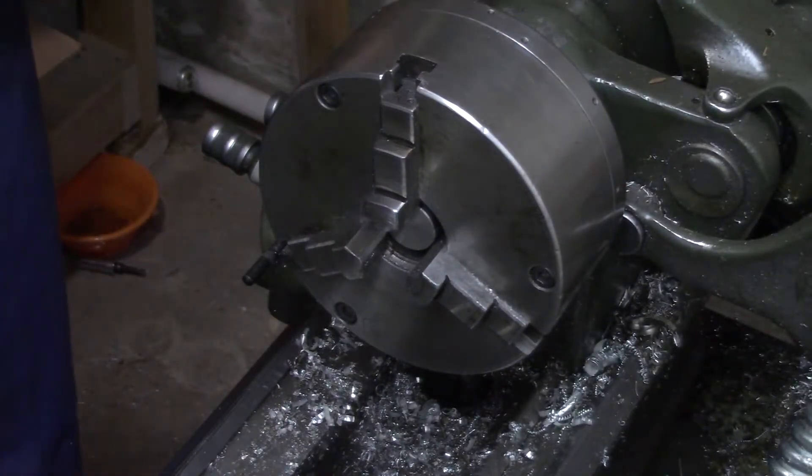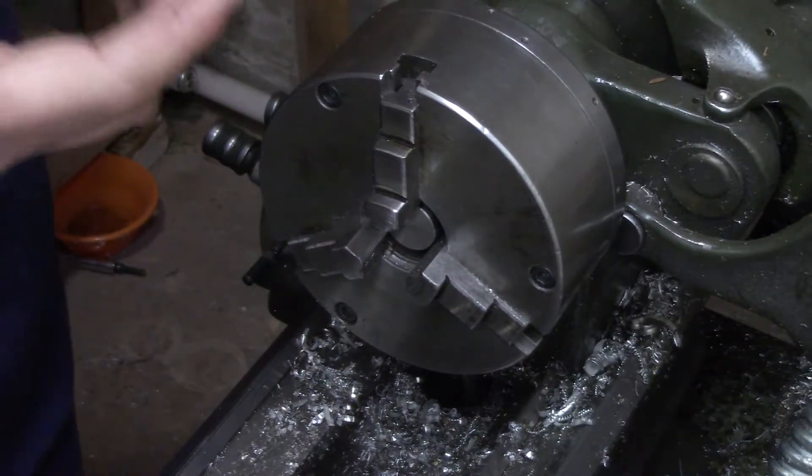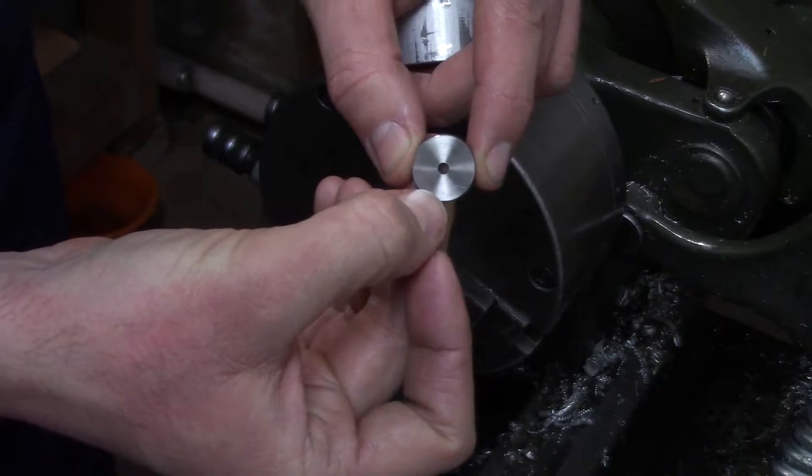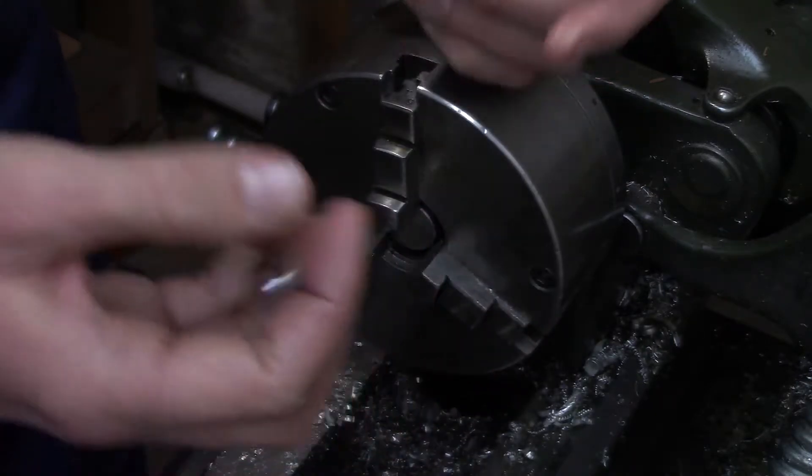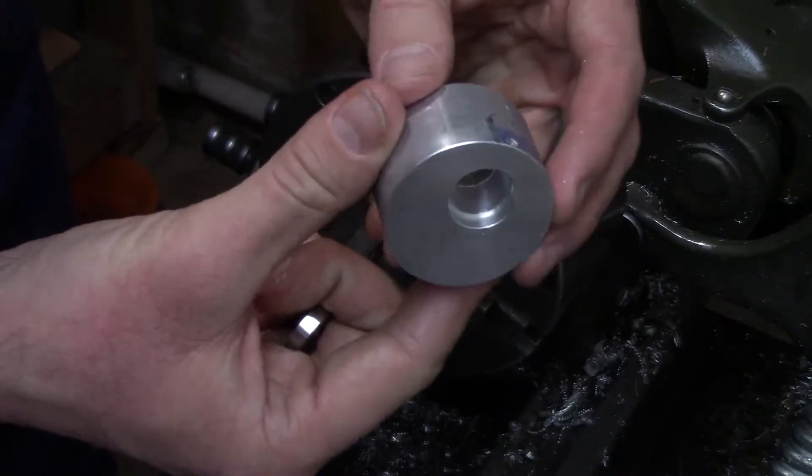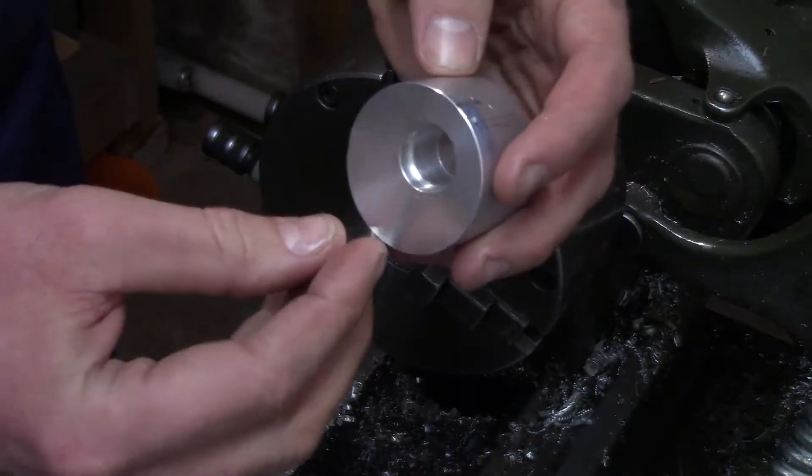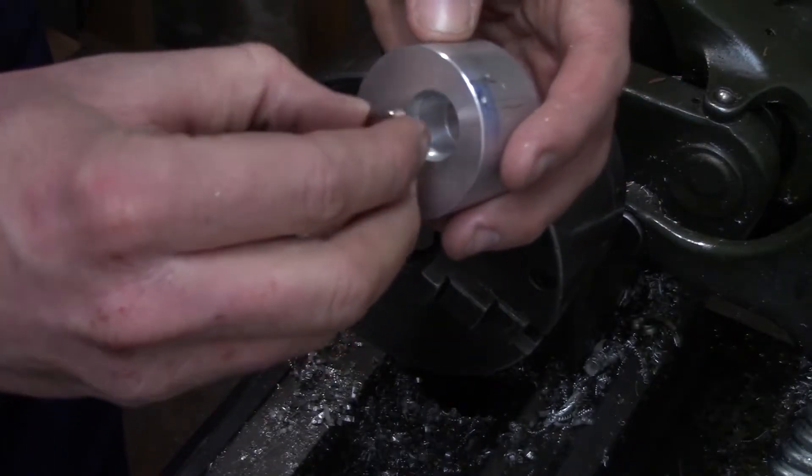Alright, for the next part, we need to drill an offset hole for the crank pin, and that offset hole is a quarter of an inch off of center. And to do that, we're going to use the offset drilling jig that I made in a previous video. I'll leave a link to that in the description and up on your screen.